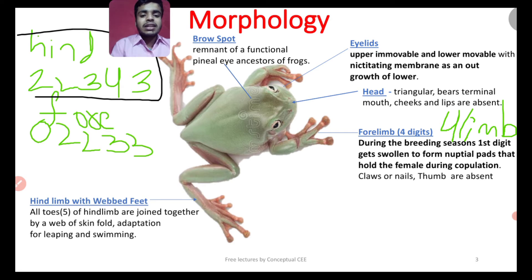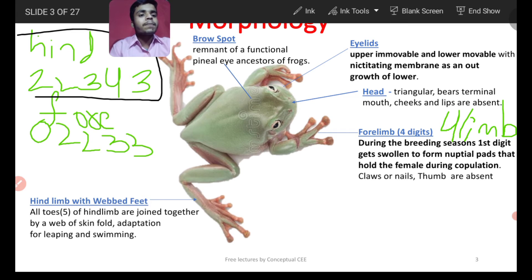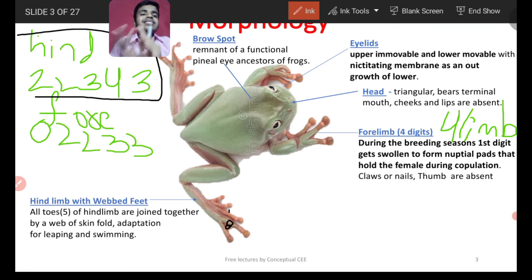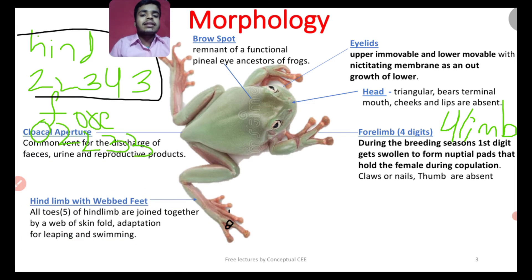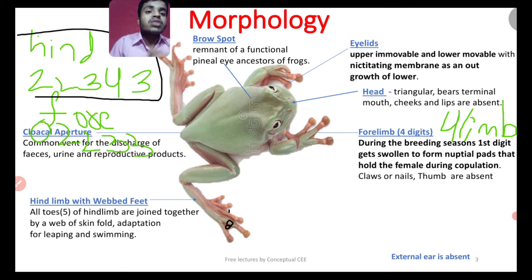The hindlimb has 5 webbed digits. The forelimb has non-webbed digits, but the hindlimb has webbed digits. These webbed fingers help in leaping from land and swimming in water. There is also a cloaca — the common vent for urine, feces, and reproductive matter. Frog has a tympanum, which is the middle ear — there is no external ear in frog.